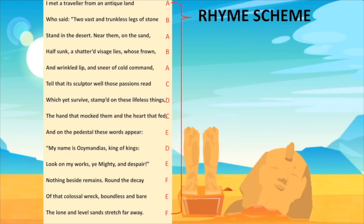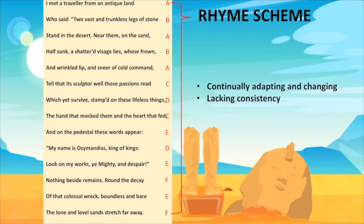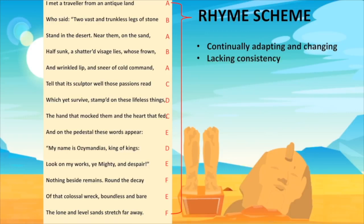And then we have the continuing rhyme scheme — ACDCEDEFE F — which doesn't follow either sonnet form. So whether you would choose to say the sonnet moves from a Petrarchan to a Shakespearean to a new form of sonnet, or simply summarise that the poem is a sonnet but one which is continually adapting and changing, lacking consistency — the question is: what does this tell us about power?